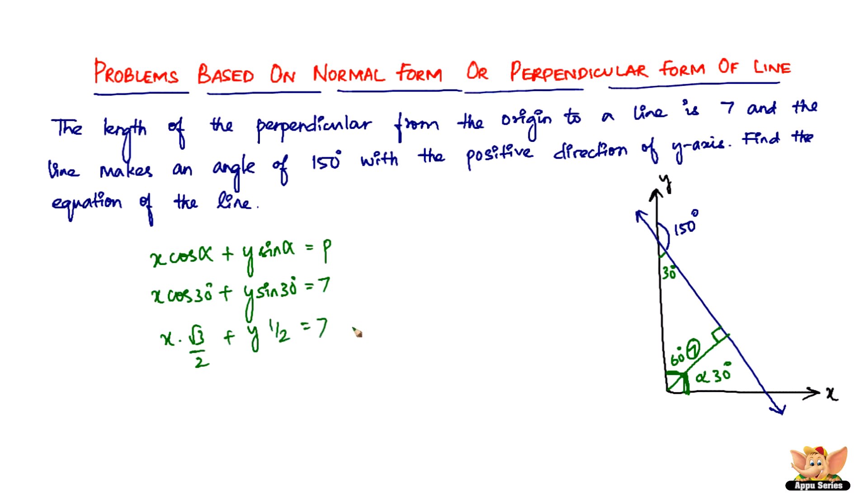So to get rid of the 2 in the denominator, multiply the entire equation by 2. So you get root 3 X plus Y equals 14. So the equation of the line in question is root 3 times X plus Y equals 14.